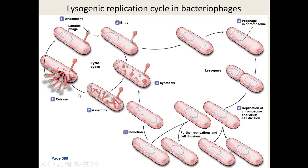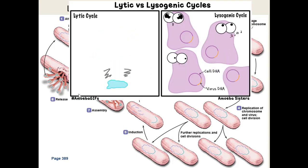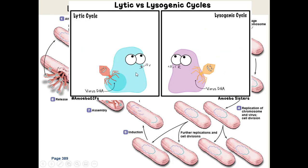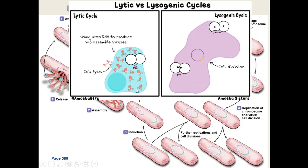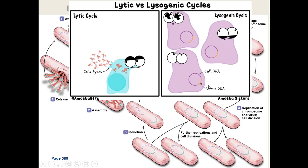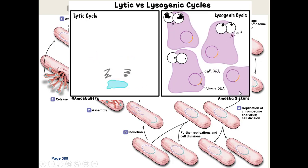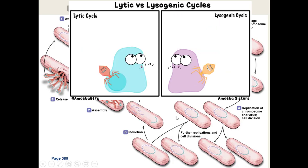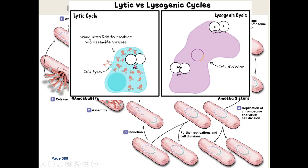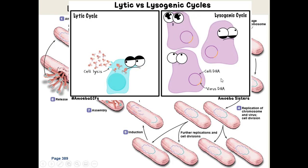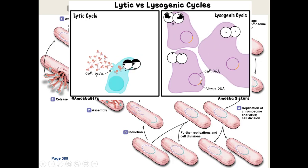Comparing the lytic cycle versus the lysogenic cycle: the lytic cycle infects a host cell, the host cell makes lots of viruses, and at some point the cell releases them. In the lysogenic cycle, the virus injects its DNA inside the cell, it becomes part of the bacterial cell, the cell reproduces — each daughter has viral DNA, giving you lots of infected cells. At some point they wait for the induction stage that sends them back into the lytic cycle.